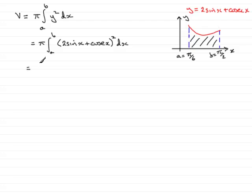Next I'd want to expand this bracket, so we'd have pi times the integral from a to b. Expanding the bracket, we have 2 sin x that's squared, so that's going to be 4 sin squared x. Then we have twice the product. The product is 2 sin x cosec x, so if we double that we get 4 sin x cosec x. And then lastly square the last term, and that will be plus cosec squared x, and that's integrated all with respect to x.